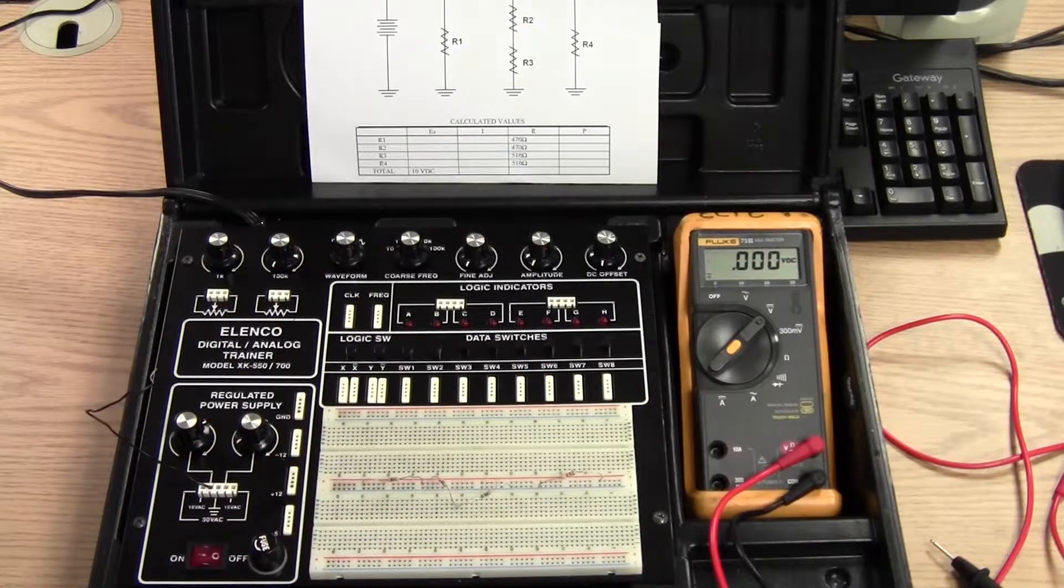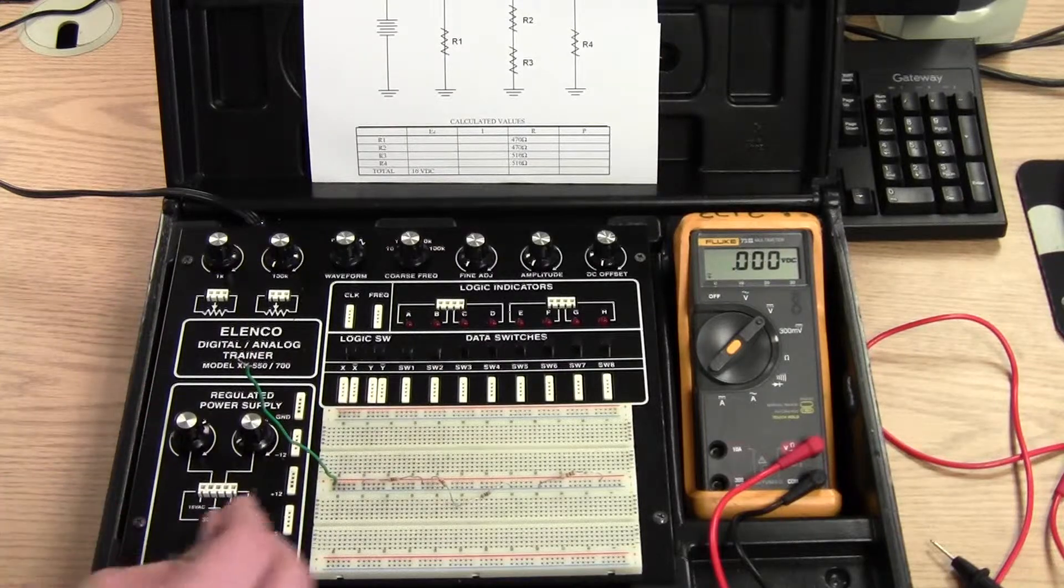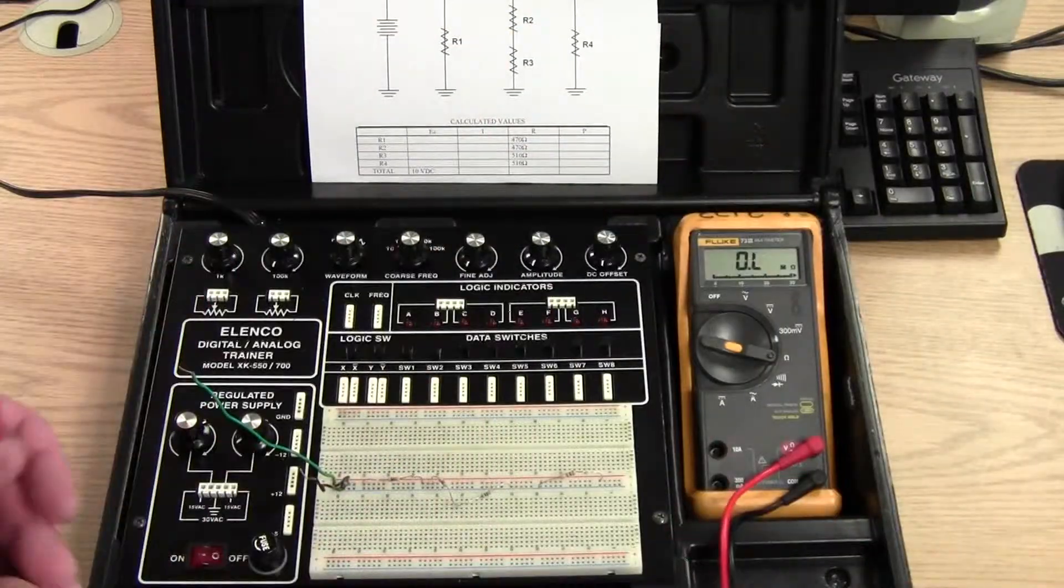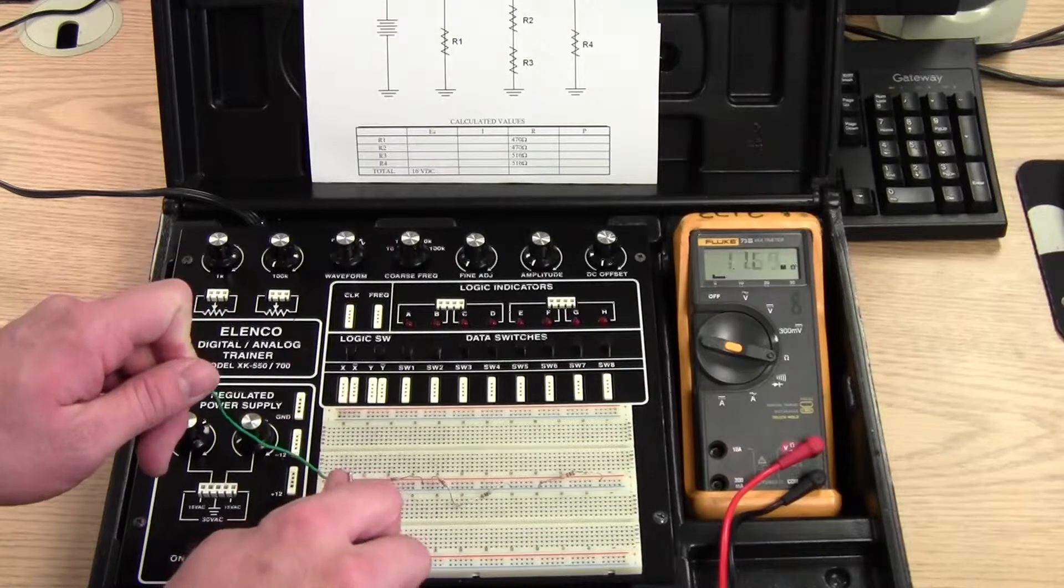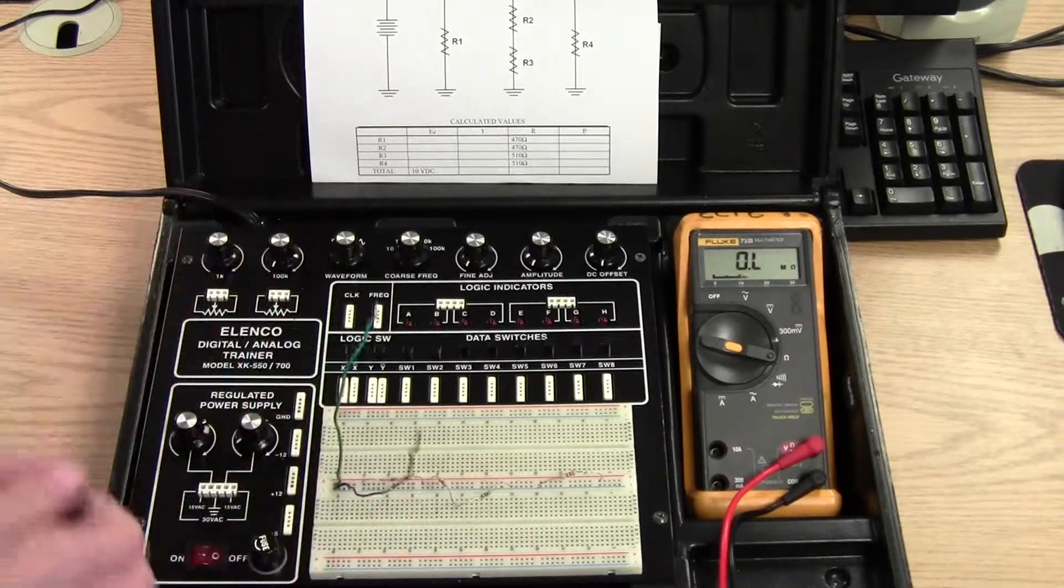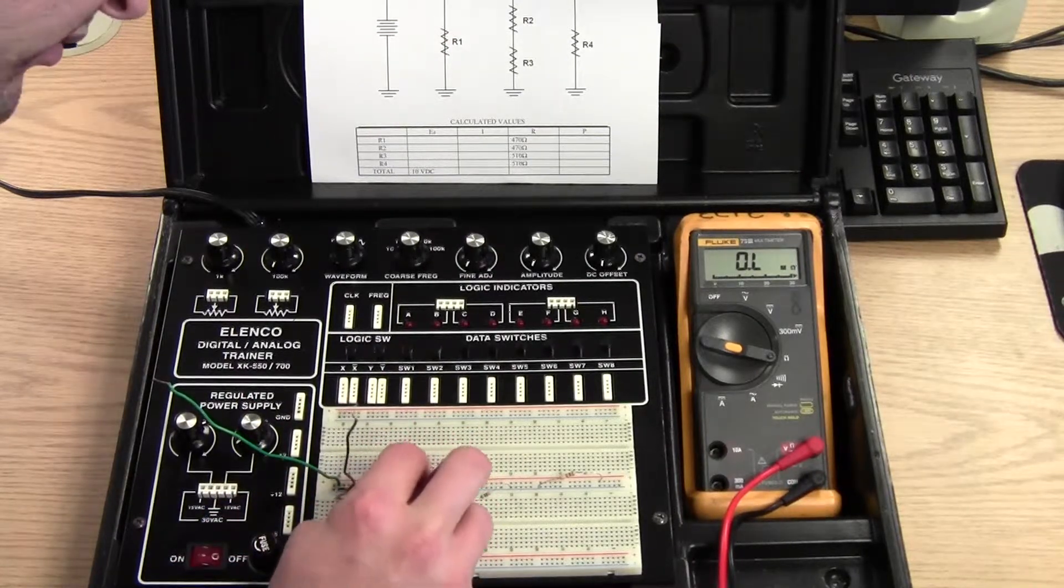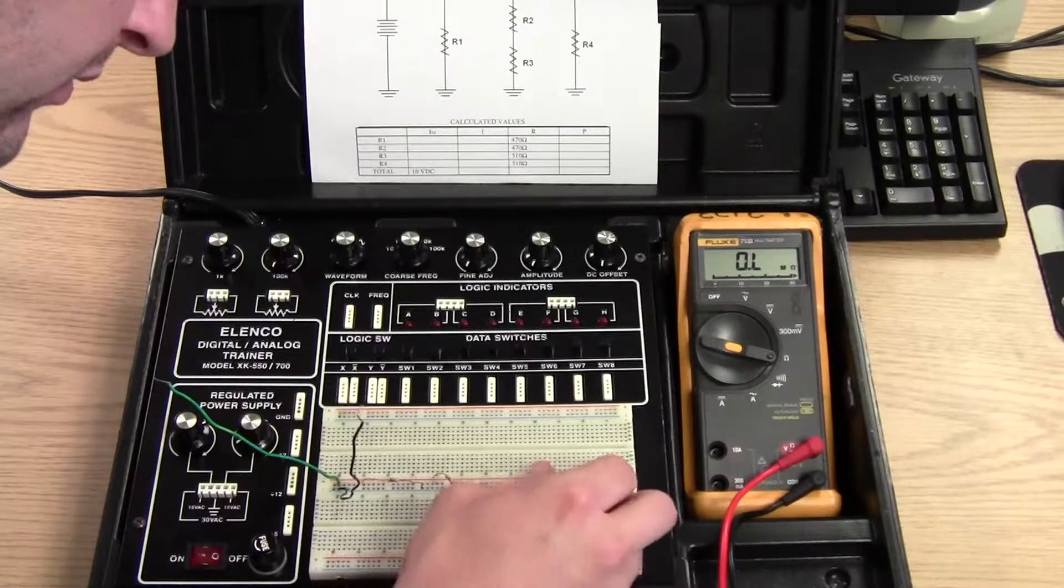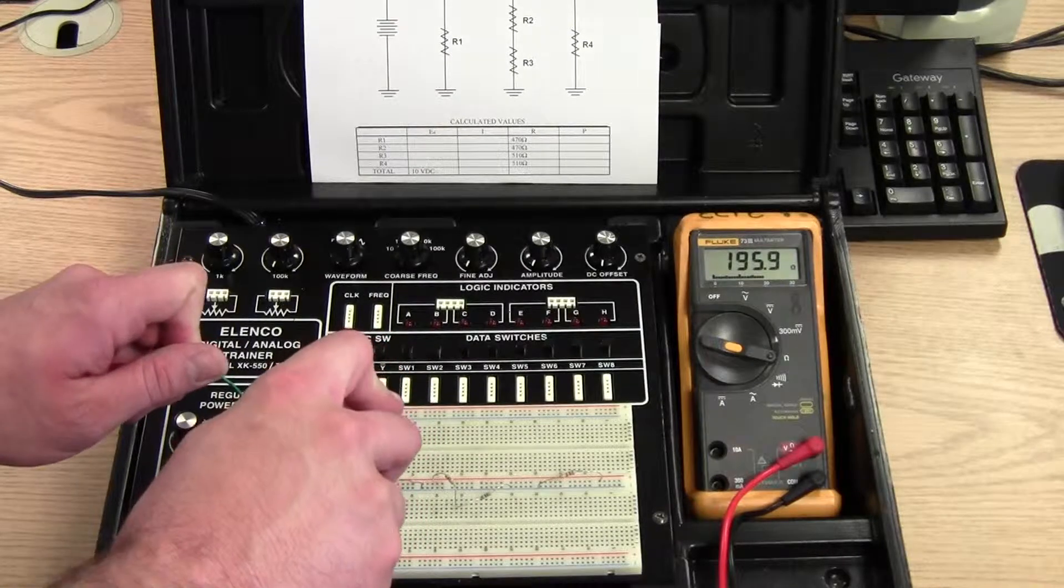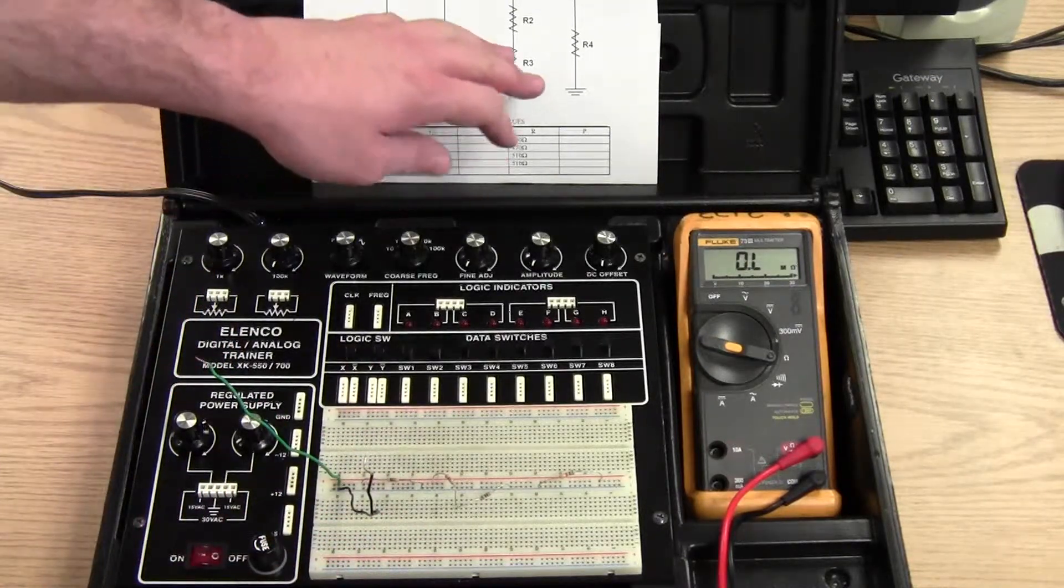So at this point I can measure total resistance of the entire circuit. Put my positive wire there. Negative wire in the negative strip. Set my meter up to measure resistance. And I got a bad connection. Let's try it again here. Alright I've got 195.9 ohms. And this is very similar to a parallel circuit.